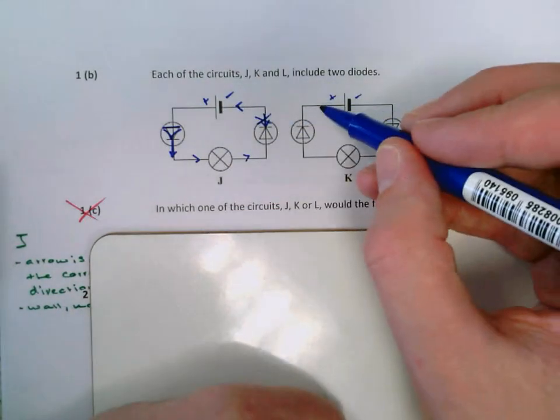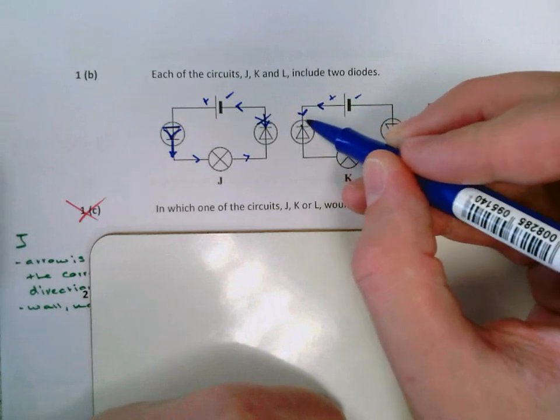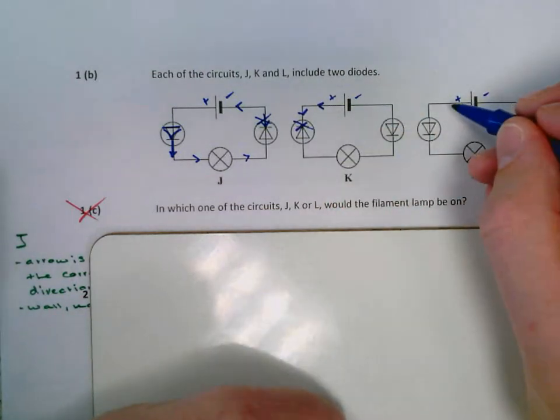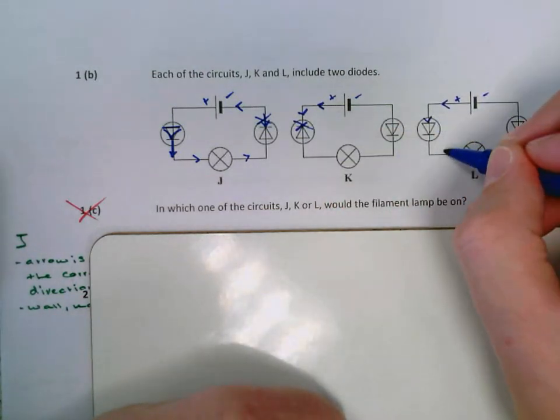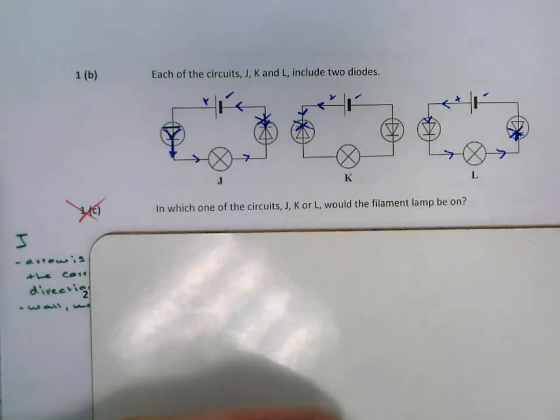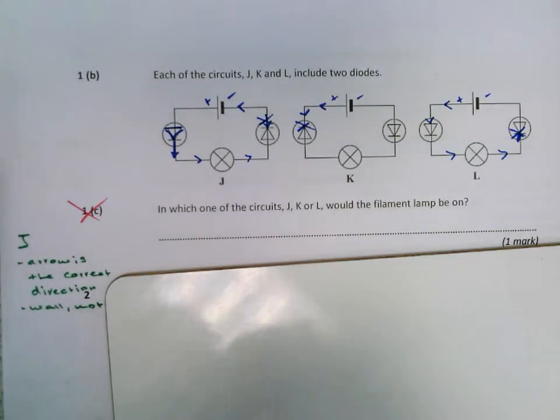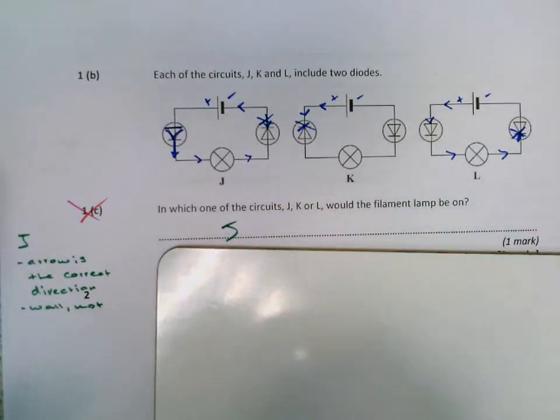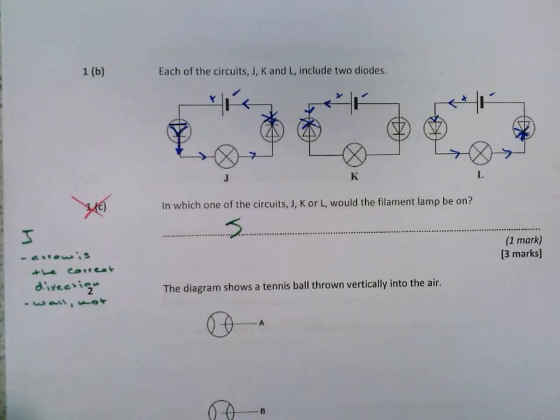Quickly, I'll just show you the other ones. If the current is flowing down here, it meets the wall, so it wouldn't work. If the current is flowing down here, we can go through this one, through the filament lamp, but then it meets the wall here. So that would be no good either. So the answer is J. I'll just write that in my green pen.